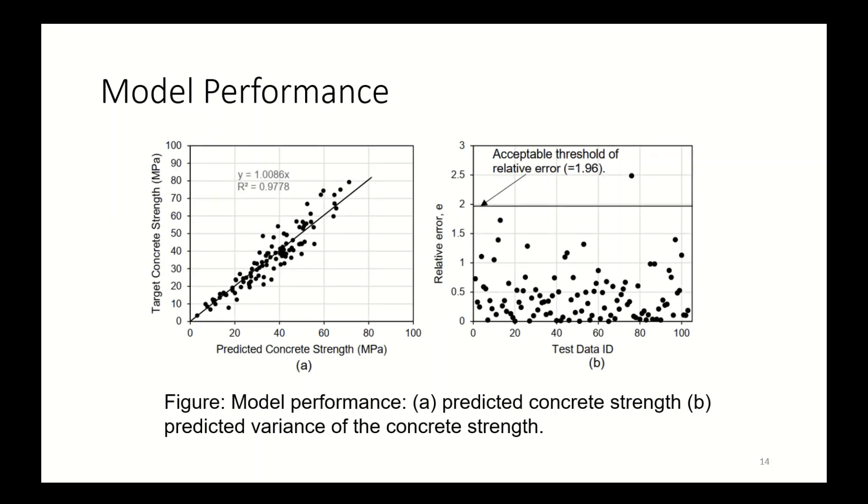Model performance: actual concrete strength results are plotted against the model's prediction. And in the first figure, the coefficient of correlation over here is 0.9 inch, which is pretty good for practical applications. So the predicted output is always within the acceptable limit.